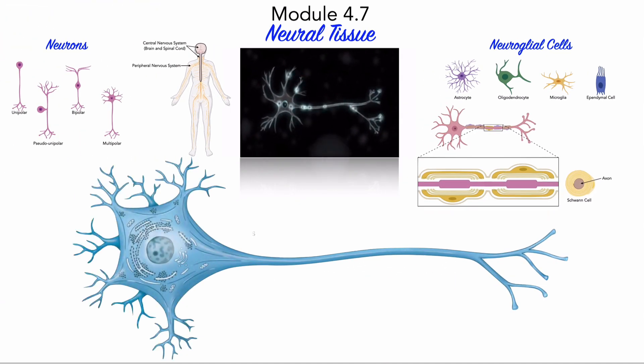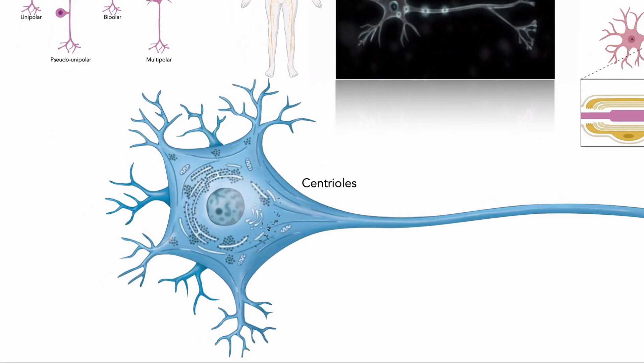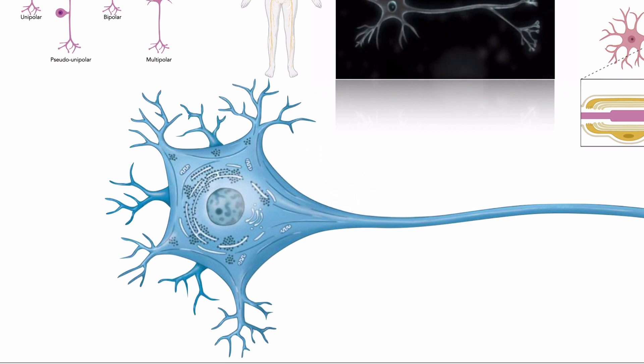The longest cells in your body are neurons. Many reach up to 1 meter in length. Most mature neurons lack centrioles, which are organelles that play an important role in cell division. Therefore, most neurons cannot divide under normal circumstances, so they have a very limited ability to regenerate or repair themselves when injured.